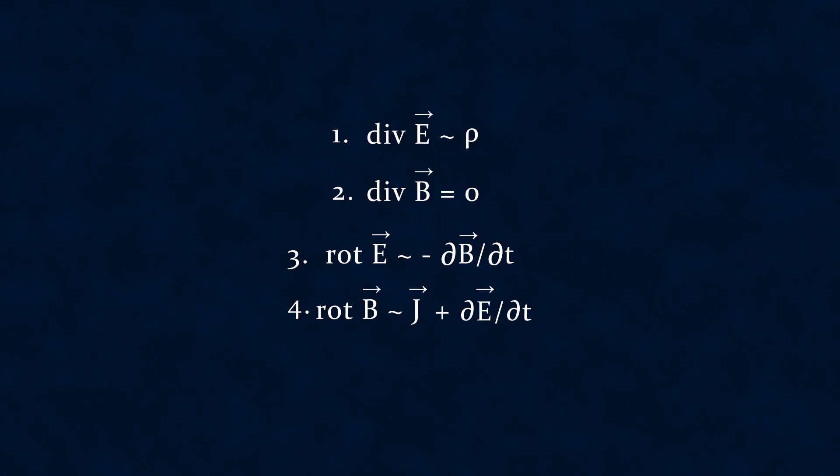Strictly speaking, these are not yet Maxwell's equations, because they contain proportionality signs instead of equality signs. The exact form of the equalities depends on the choice of unit system, that is, in what units we measure current, charge, electric field intensity, magnetic induction, and so on. For example, in the SI system, Maxwell's equations are written in this way. Here, epsilon zero and mu zero are fundamental physical constants known as the electric constant and magnetic constant, previously called the vacuum permittivity and permeability, which we can for instance determine through experiment.